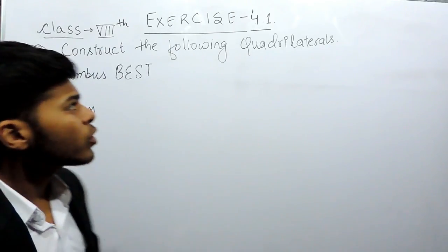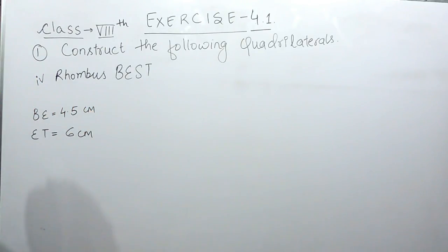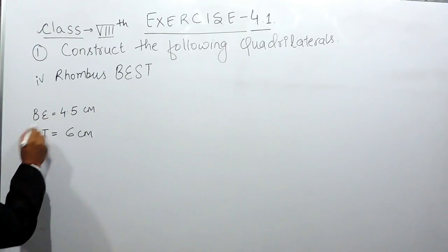Hello everyone, this is the fourth part of question number 1 of exercise 4.1. In this fourth part we have to construct the rhombus by the name BEST and we are given these two things.